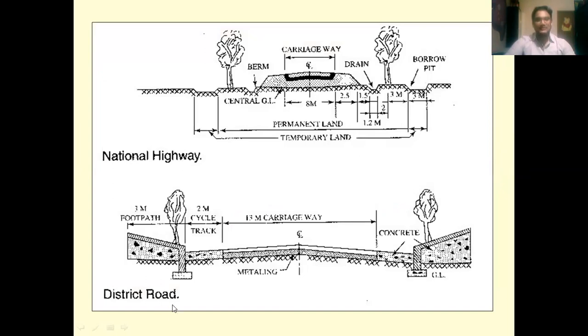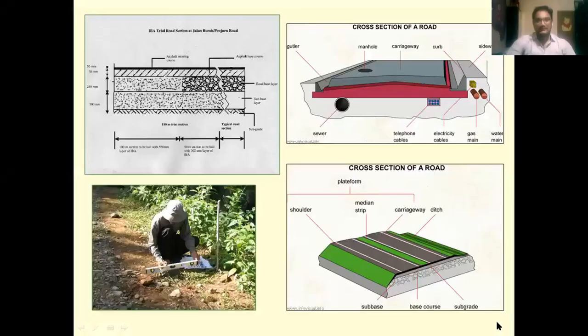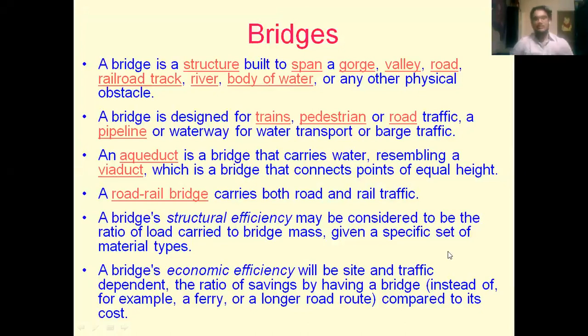In the road cross-sections shown here, this is the national highway and this is the district road. National highways and district roads vary based on the width of the carriageway and their features. This is how natural road cross-sections and the IRC-12 road section look.